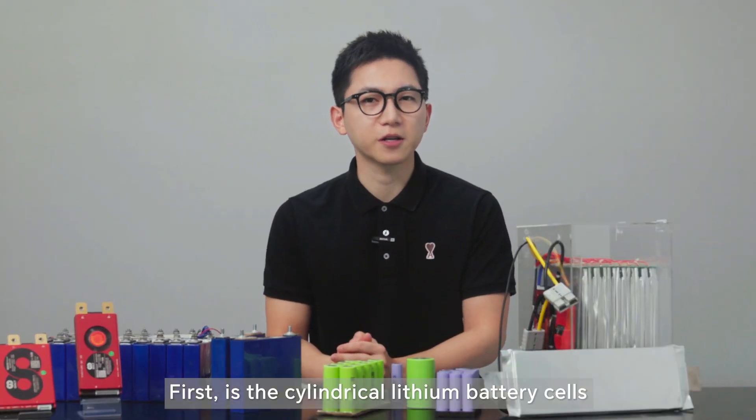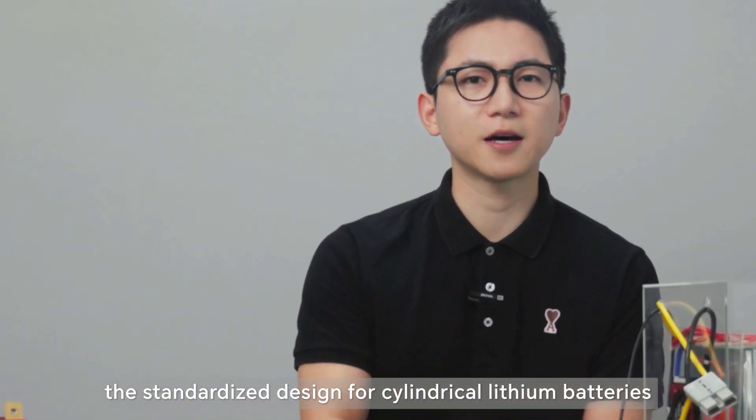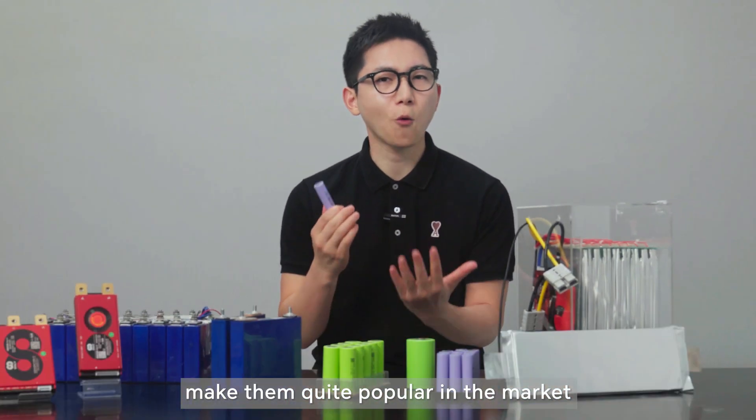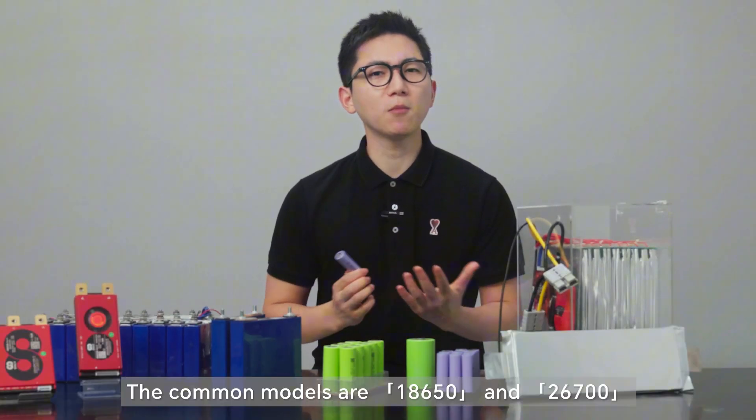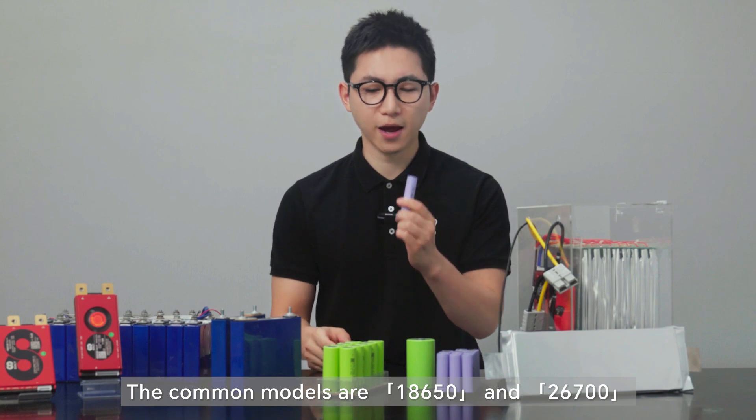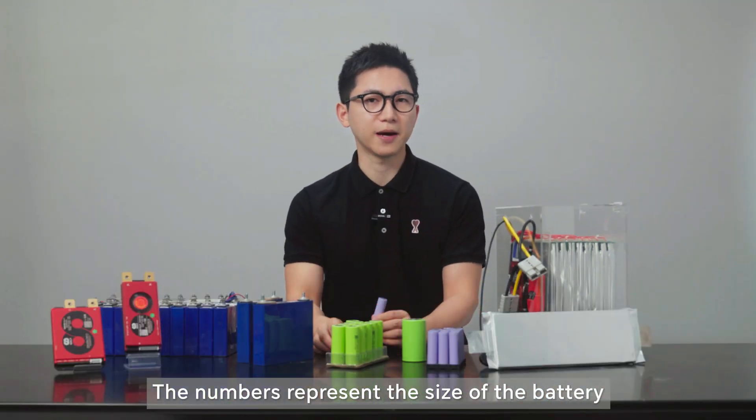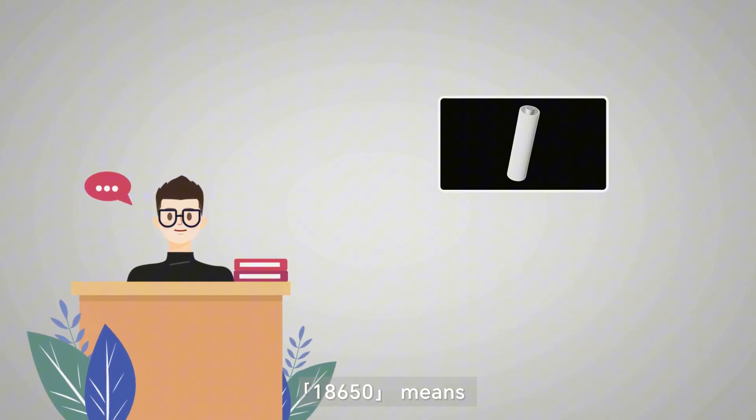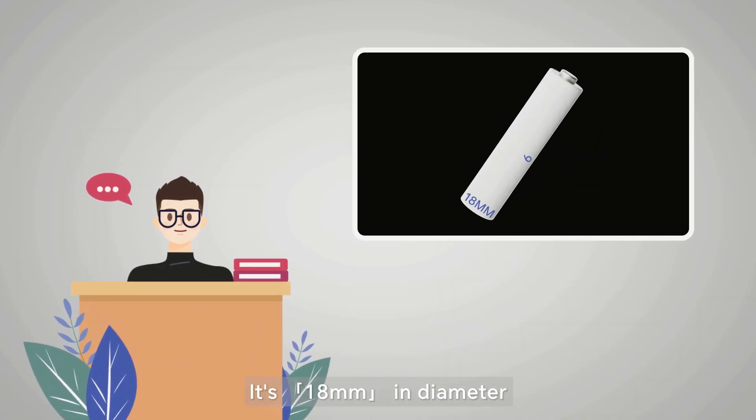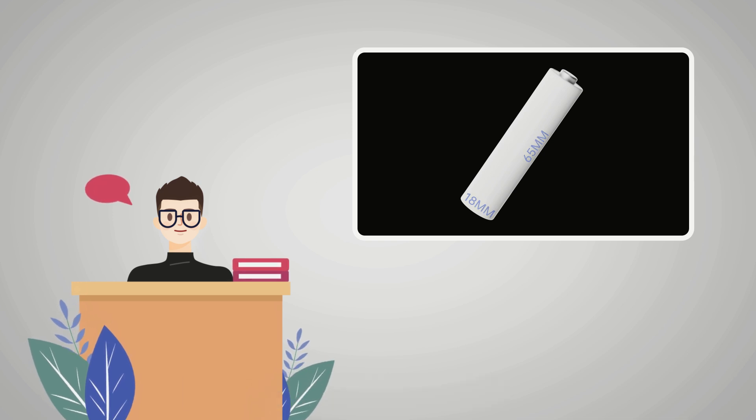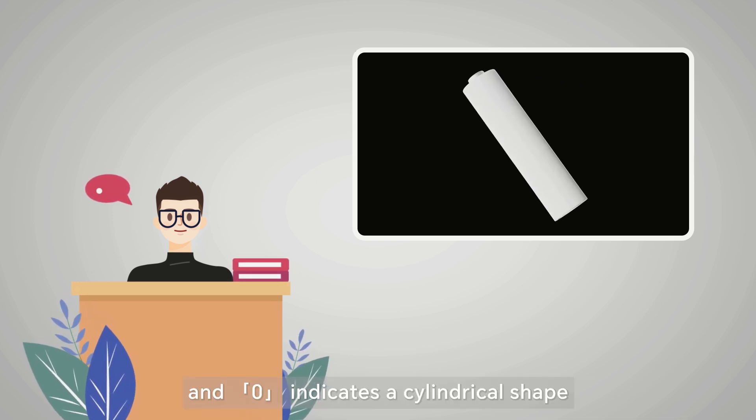First is the cylindrical lithium battery cells. The standardized design of cylindrical lithium batteries make them quite popular in the market. The common models are 18650 and 21700. The numbers represent the size of the battery, like 18650 means it's 18mm in diameter and 65mm in height, and zero indicates cylindrical shape.